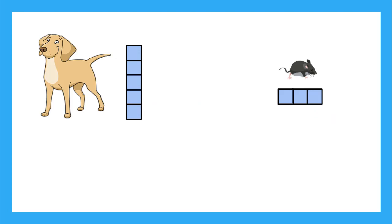In the video Order by Length, we learned that we can compare the heights and lengths of things by comparing them to a number of boxes. We can see that this dog is taller than 5 blocks, and that this mouse is shorter than 3 blocks.